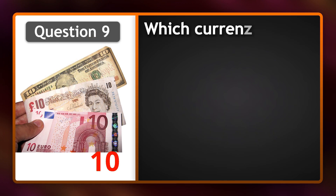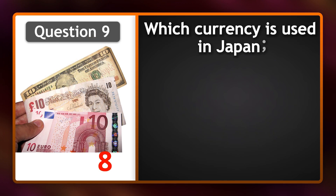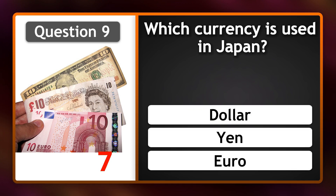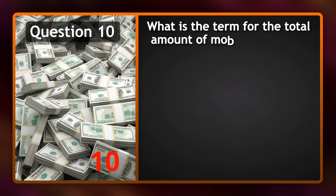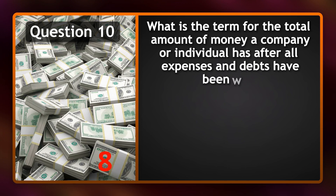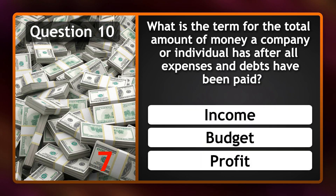Which currency is used in Japan? Yen. What is the term for the total amount of money a company or individual has after all expenses and debts have been paid? Profit.